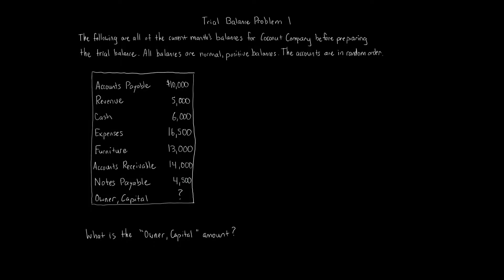Trial balance problem one. The following are all of the current month's balances for Coconut Company before preparing the trial balance. All balances are normal positive balances and the accounts are in random order. We have: accounts payable $10,000, revenue $5,000, cash $6,000, expenses $16,500, furniture $13,000, accounts receivable $14,000, notes payable $4,500, and owner's capital is unknown. What is the owner's capital account amount?